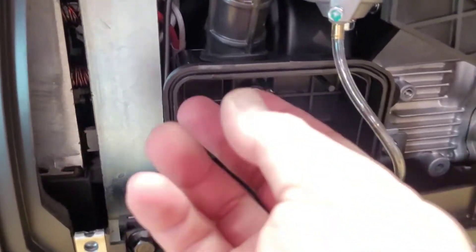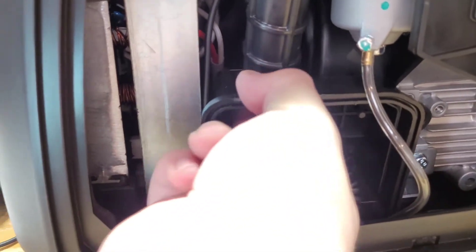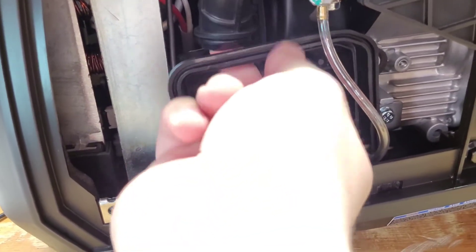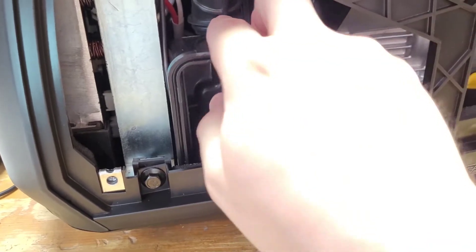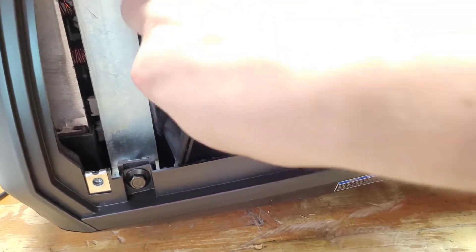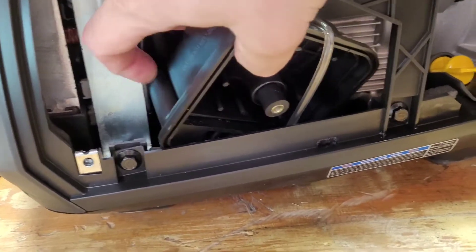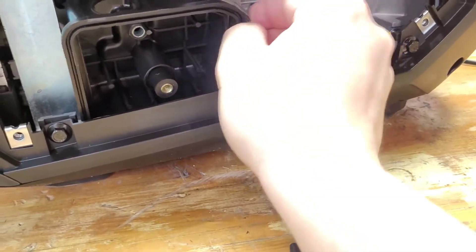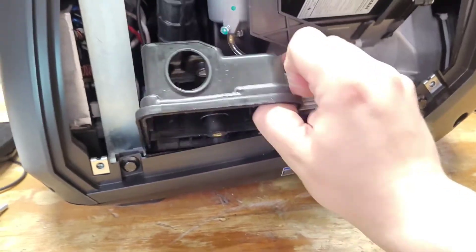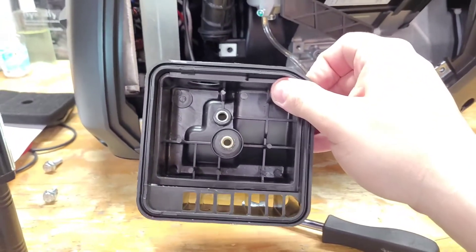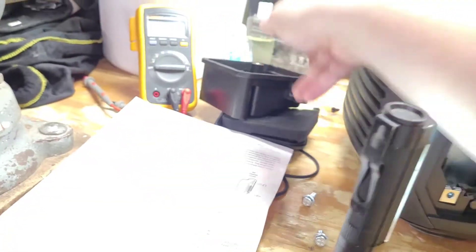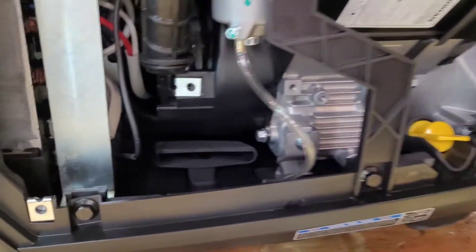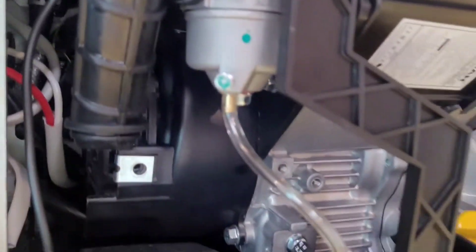Once we have those out of the way, we can come in here and push this air tube, disconnect it from our box here and pull this out. Okay, now the airbox is out and we have good access to the carburetor here.